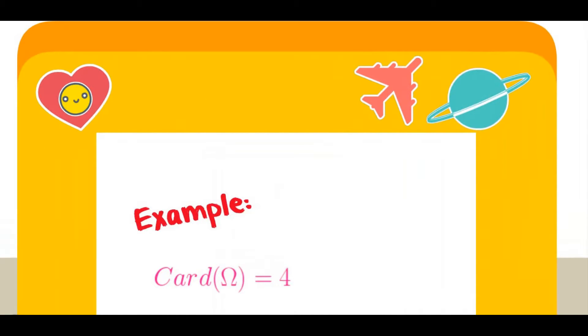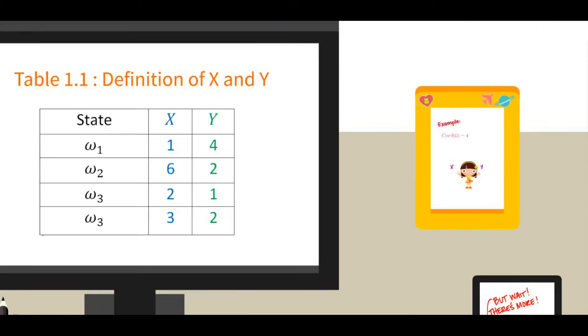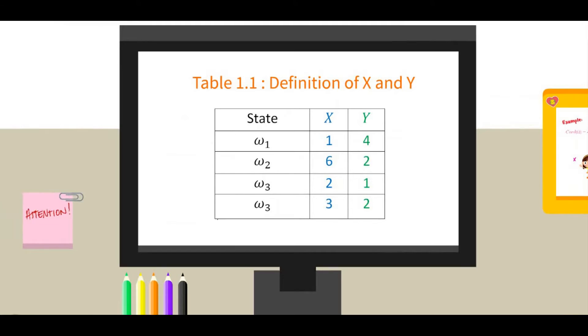Say cardinal omega equals 4, and we have two random variables, x and y, and they are defined in table 1.1.